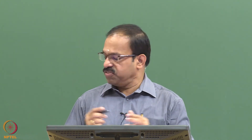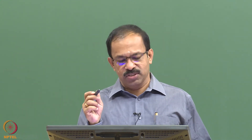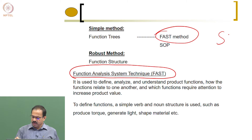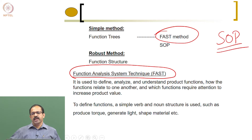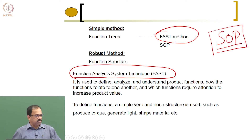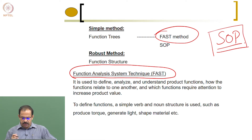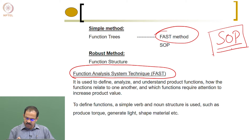We are discussing functional decomposition and trying to understand what functions are needed in a product to get its final outcome or main function. We discussed two methods: the first is SOP, the Subtract and Operate Procedure, used for existing products where by removing components you identify the functions.